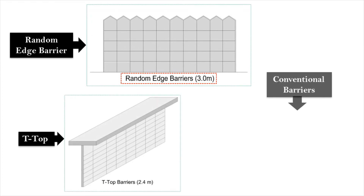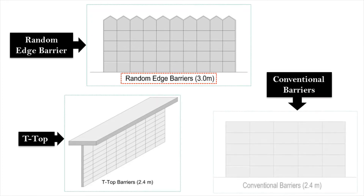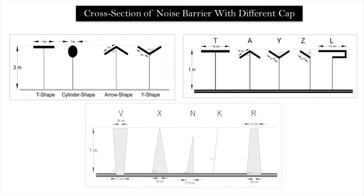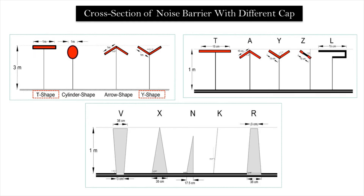The acoustic performance of a random edge barrier was found to be efficient compared to other conventional barriers over a broad frequency range. Using a quadratic residue diffuser to shield the top surface of T-shape and Y-shape barriers creates greater insertion loss than using a fibrous absorbent material on the barrier.